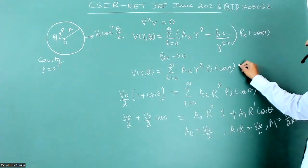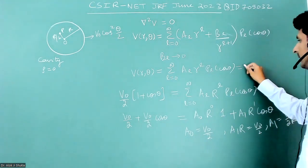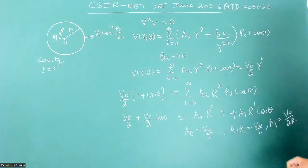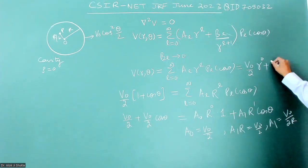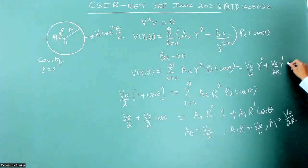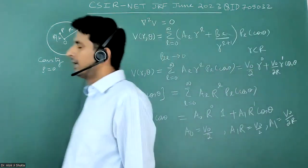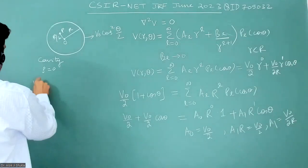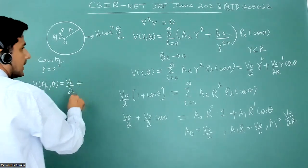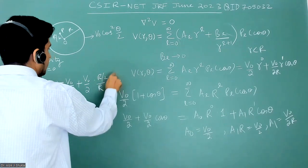What will be the solution? In general it will be A₀, which is V₀ by 2, R to the power 0, plus A₁, which is V₀ by 2R, and R to the power 1 times cos theta. This is the solution at any point R less than capital R. But since they have asked the solution at a point R by 2, just put V as R by 2, R as R by 2.